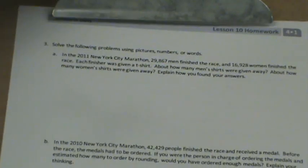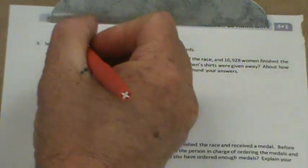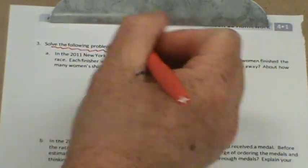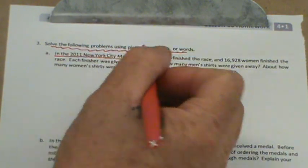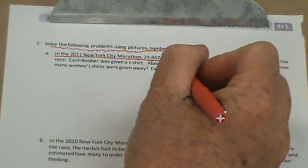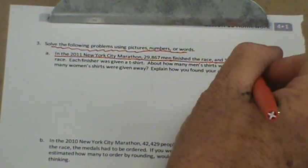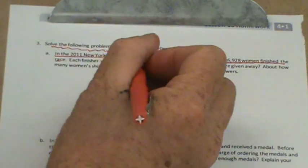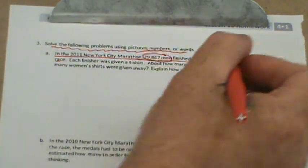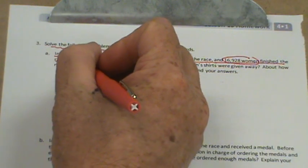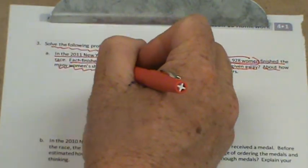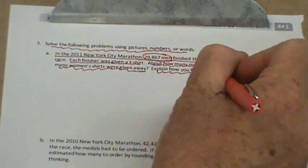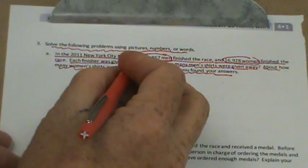Those are all the ones we're doing on that side. Let's flip it over really quickly. And we're going to solve the following problem using pictures, numbers, or words. It says in the 2011 New York City Marathon, 29,867 men finished the race and 16,900 women finished the race. That's what we know. Let's use the old vertical number line for the men.